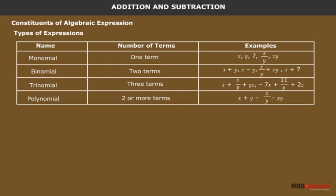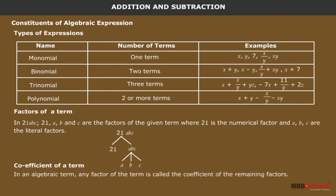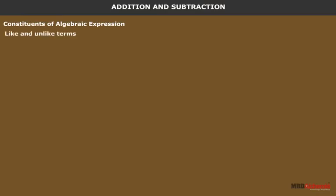As shown in the table, for the term 21abc, the factors are 21, a, b, and c, where 21 is the numerical factor and a, b, c are the literal factors. Regarding the coefficient of a term: in an algebraic term, any factor of the term is called the coefficient of the remaining factors. For example, for the algebraic term 13xy, the coefficient of x is 13y.